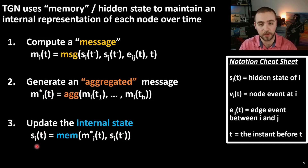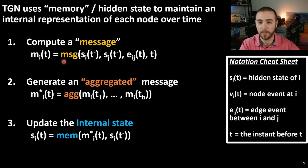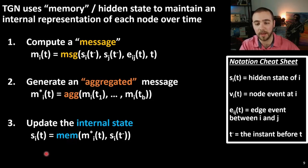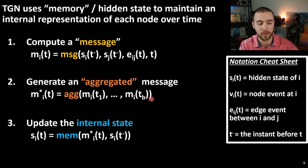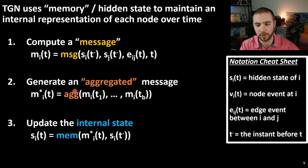While this is a lot of detail, I hope it provides a high-level overview of how the model works. In general, the message function, aggregation function, and memory function can be any function you want to define — feedforward neural networks, or even a simple average with no learned weights. Exploring specific forms of these functions, especially the aggregation function, can be an area of research for different specific application areas.